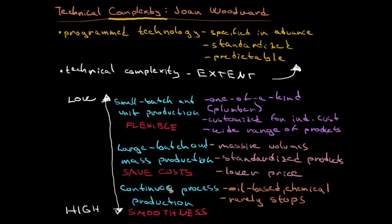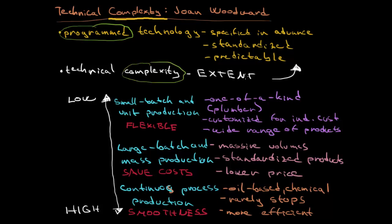Thanks to that smoothness, continuous process production is even more technically efficient than large batch production — in fact, this is the maximum efficiency we can achieve. That was Joan Woodward's first idea: starting from the notion of programmed technology, understanding complexity as its extent, and ranging from low to high technical complexity.